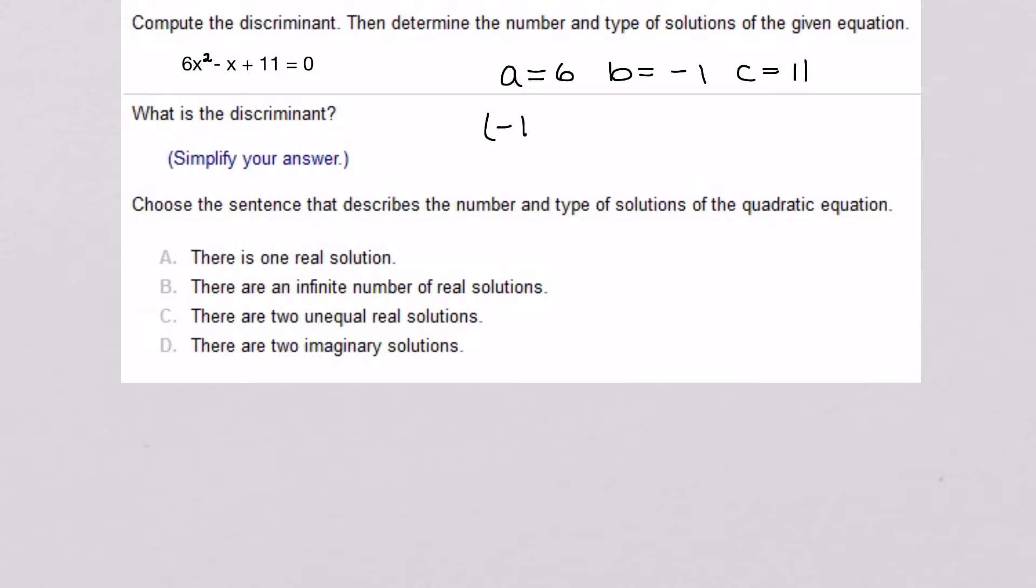And so, we'll calculate B squared minus 4 times A times C. So I have negative 1 squared, which is 1 minus 4 times 6 is 24, and 24 times 11 is 264. 1 minus 264 gives me a negative 263, which is definitely negative. So, what is my discriminant? All right, I'm not going to move it over there. You get the idea. So, that's my discriminant.